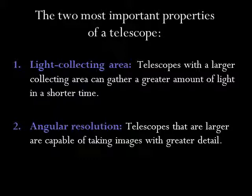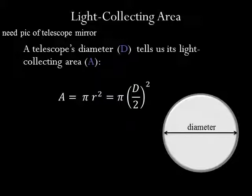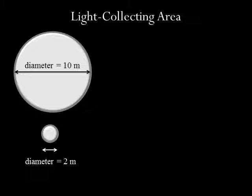The two most important properties of a telescope are the light collecting area and angular resolution. Telescopes with a larger light collecting area can gather a greater amount of light in a shorter time, and telescopes that are larger are capable of taking images with greater detail. A telescope's light collecting area tells us how much total light it can collect at one time. Telescopes are generally round, so we usually characterize a telescope's size by the diameter of its light collecting surface. A 10-meter telescope has a light collecting area that is 10 meters in diameter, and a 2-meter telescope has a light collecting area that is 2 meters in diameter.